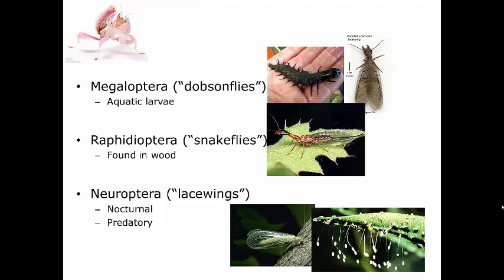For Neuroptera, the females lay their eggs on slender silken stalks — the eggs sit atop these stalks. This is similar to how males of some organisms place spermatophores on silken stalks; here the females lay eggs on them. The eggs sit on top of these stalks, sticking out in the environment.